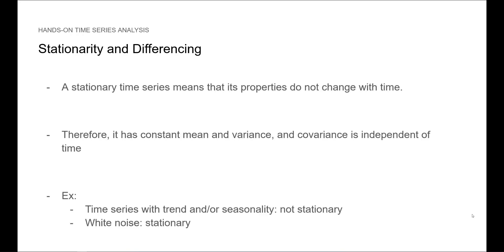A time series is said to be stationary when its properties do not change with time. Therefore, it has constant mean and variance, and covariance is independent of time.